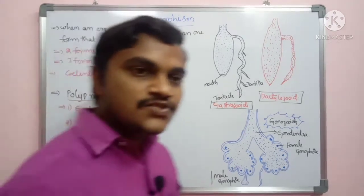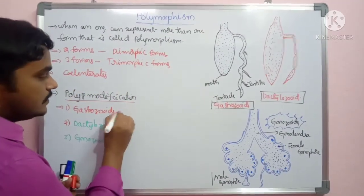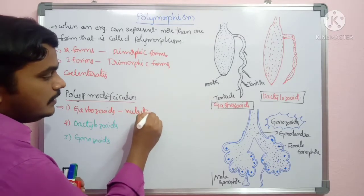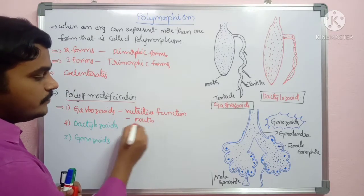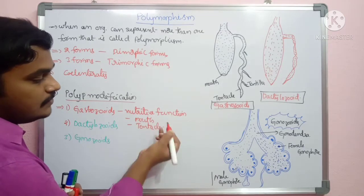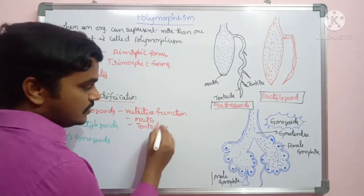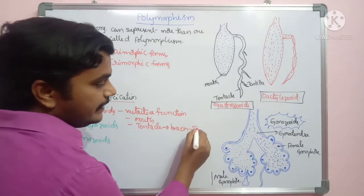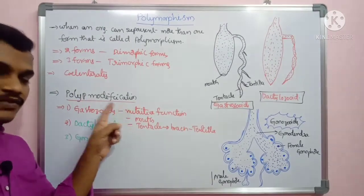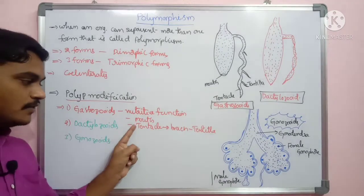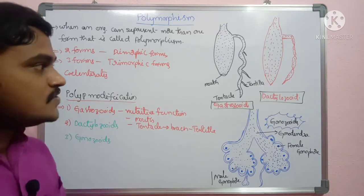First and foremost, gastrozooids. Gastrozooids have a nutritive function — they collect food from the surroundings. They have a mouth. Below the body there is a tentacle. The tentacle contains a number of nematoblast cells. The tentacle has branches, and those branches are called tentilla. So gastrozooids have a mouth, tentacles with branches called tentilla, and their main function is nutritive.